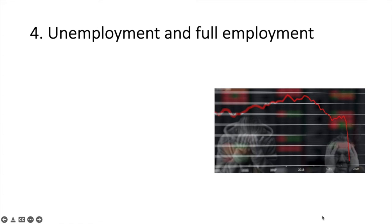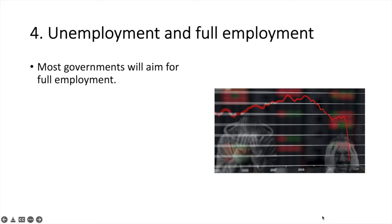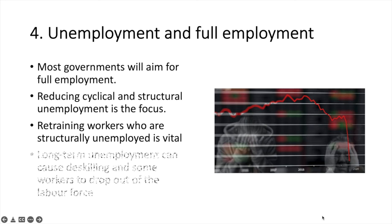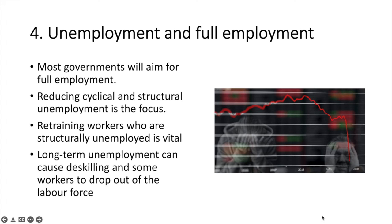The fourth aim is for full employment. Most governments will aim for full employment, generally between 3–5% unemployment, with frictional unemployment being acceptable as there will always be some workers between jobs. Macroeconomic policy will focus on addressing cyclical and structural unemployment. Boosting aggregate demand should help reduce cyclical unemployment. For structural unemployment, different strategies will be needed such as retraining and providing opportunities to individuals to develop new skills. Long-term unemployment is a major concern because workers can lose their skills and may drop out of the labour force. The government will aim to maximize the capabilities of its labour force.